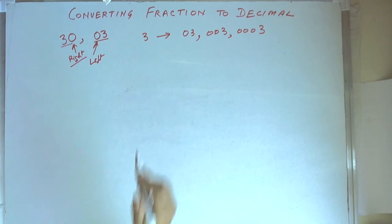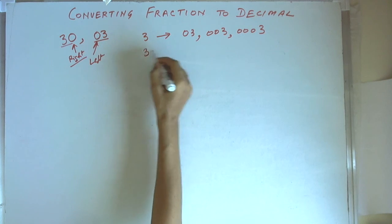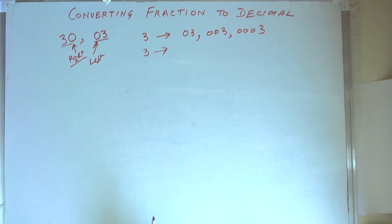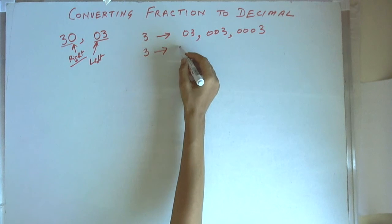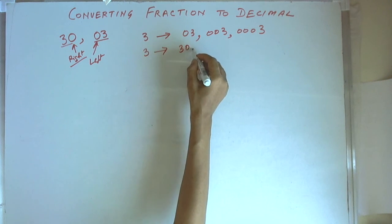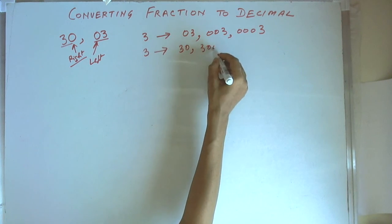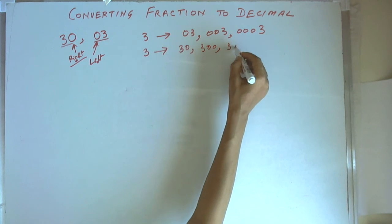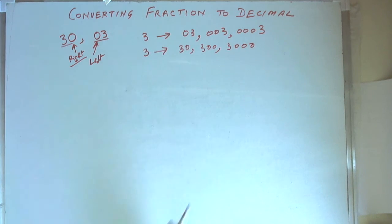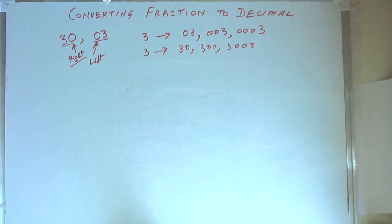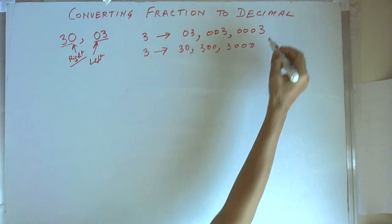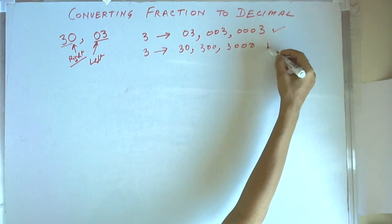But if we put a 0 on the right hand side, it will become 30, then 300, then 3000. So we cannot put 0 on the right hand side, but we can put any number of 0s to a number on the left hand side. This is to be understood first.